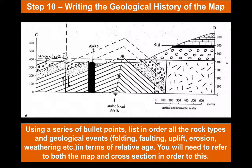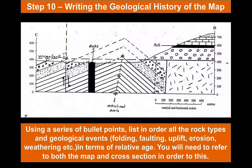We can then use this cross-section to work out the geological history — which beds are the oldest, which are the youngest, what the relationships between these beds are, and where structural features like folding and faulting must have occurred. Have a go at that for this particular map and draw a geological column.